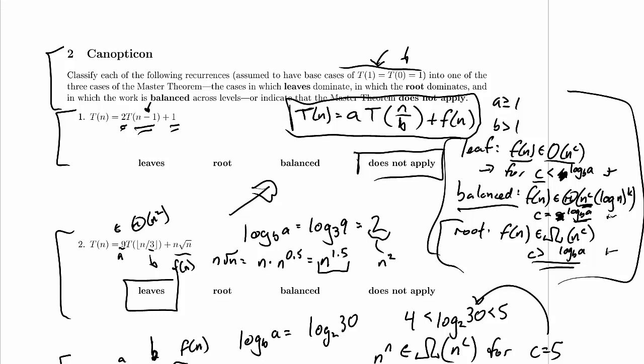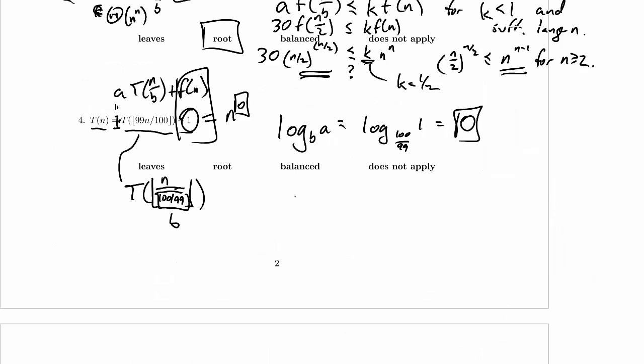And f(n) is n to the 0. So n to the 0 is certainly an element of theta of n to the 0, it is n to the 0. So we have f(n) is equal to n to the 0, it is an element of theta of n to the 0, which is theta of n to the log base b of a. So that puts us in the balanced case.